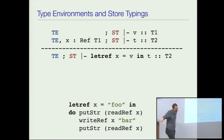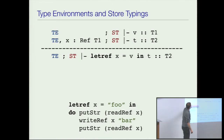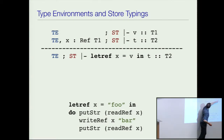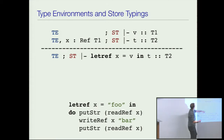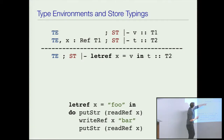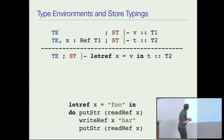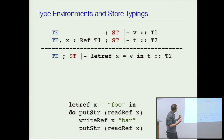This idea of phase change also shows up in the typing rules for let ref. To work out the type of let ref, first you work out the type of the value — say the value has some type T1. Then you add that type to the type environment, so the term can refer to x when working out its type, and x has type ref T1.